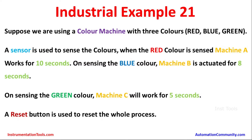Suppose we are using a color machine with three colors: red, blue, and green. A sensor is used to sense the colors. When the red color is sensed, machine A works for 10 seconds. On sensing blue color, machine B is activated for 8 seconds. On sensing the green color, machine C will work for 5 seconds. And last, a reset button will be used to reset the whole process.